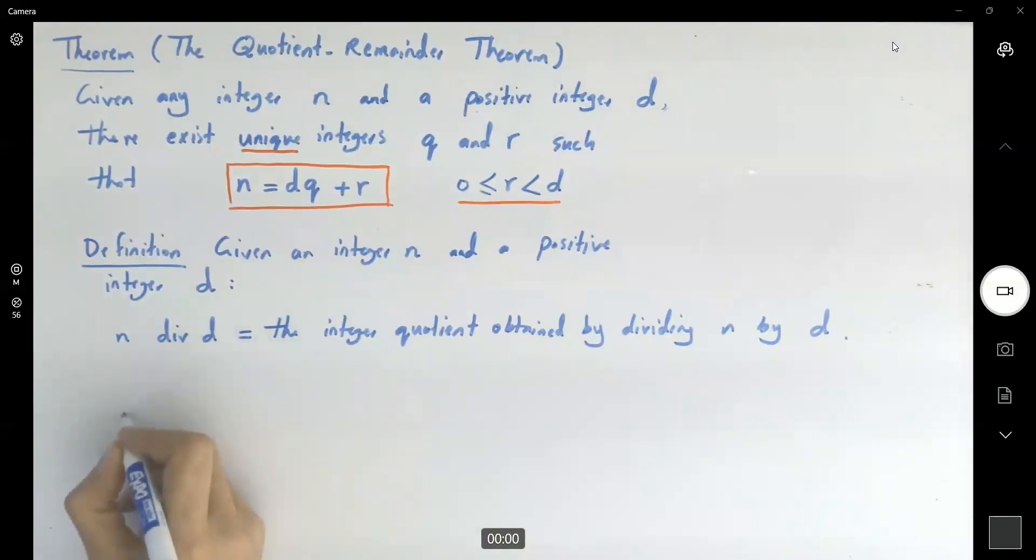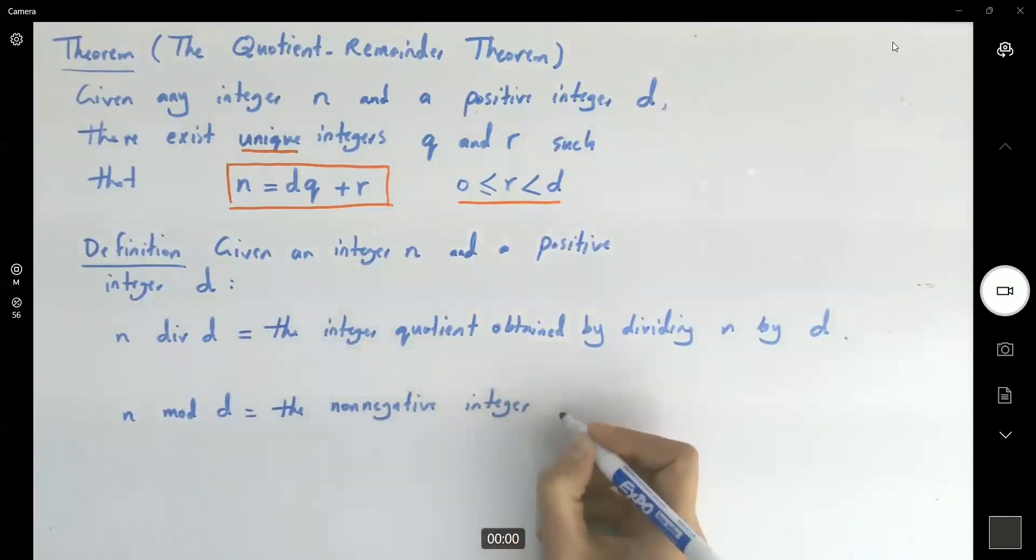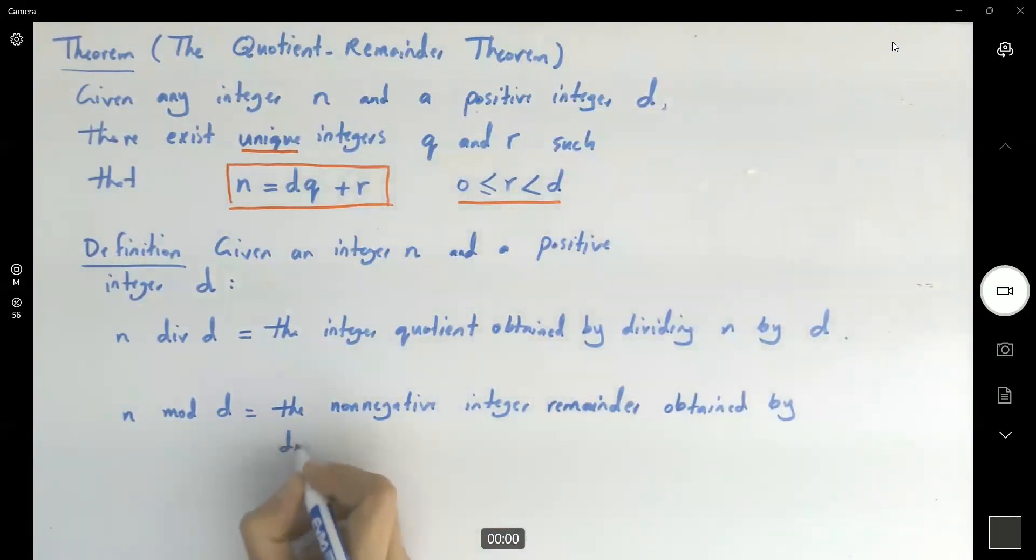When we write n mod d, for those of you who are in programming, you're already familiar with these two. n mod d is the non-negative integer which gives you the remainder. Non-negative integer, which is the remainder, it gives you the r, obtained by dividing n by d.